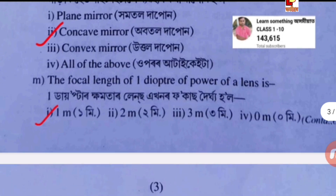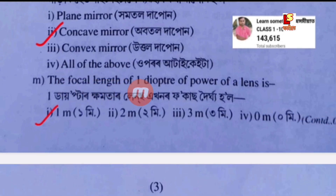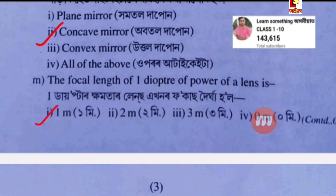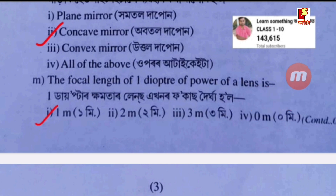Next question: the focal length of a lens of power one dioptre — the power of a lens is related to its focal length.